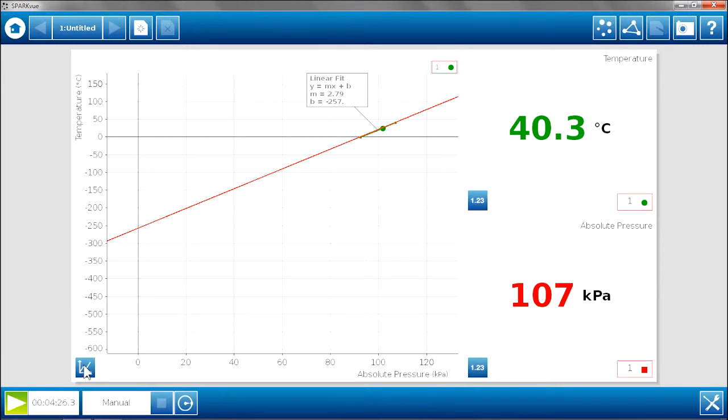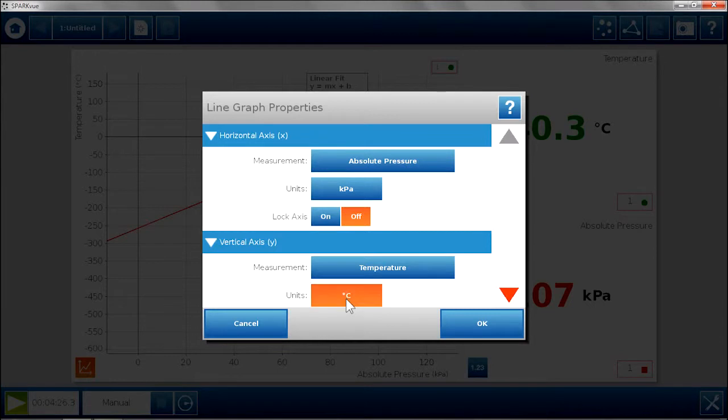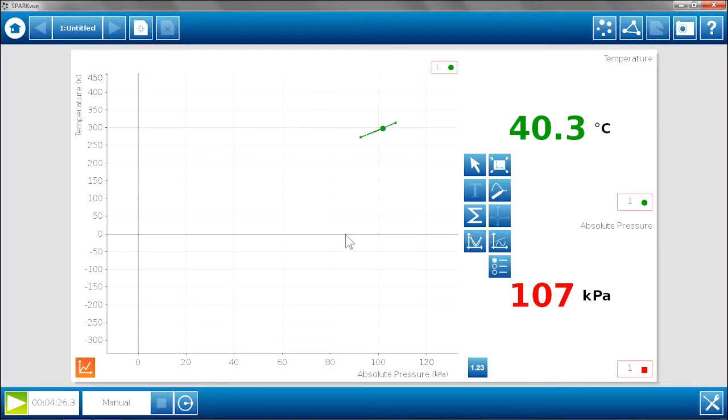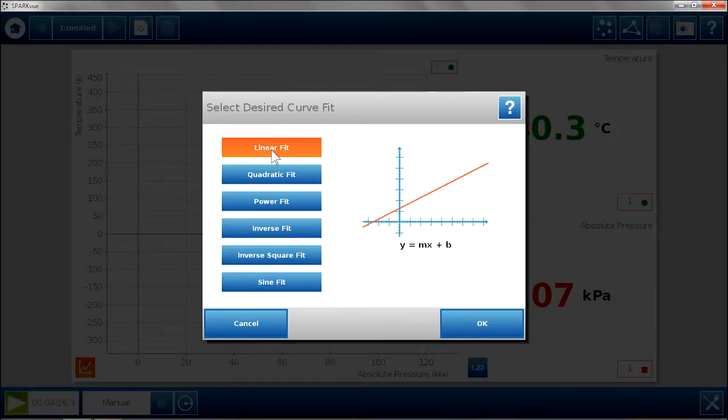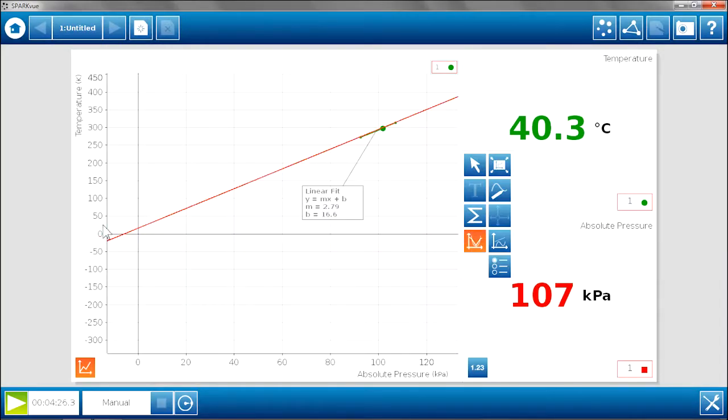As an added extension, we can actually change the scale on the graph to reflect temperature in Kelvin. So we can open up our graph and change our y-axis to the Kelvin scale. We can put that fit on there again. And now we are not quite at the origin, but we are close to the origin, showing that the temperature scale in Kelvin, zero on there is the absolute zero temperature that we can have.